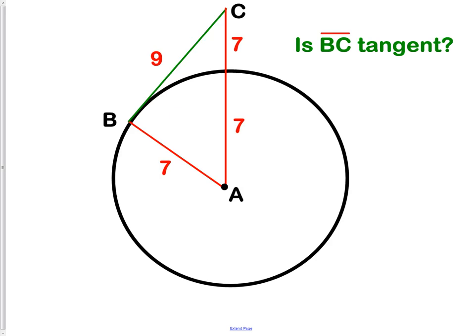Next, this question asks, is BC tangent to the circle? It looks like it, but we can prove it. Remember, if it's tangent to the circle, that means that this angle right here has to be a right angle. Back when we learned about the Pythagorean theorem in Chapter 7, we learned that in order for this to be a right triangle, this must be true.